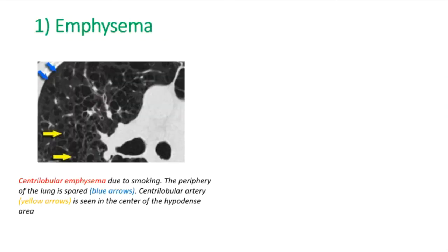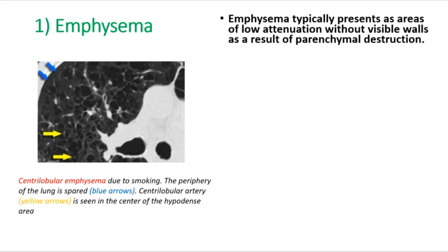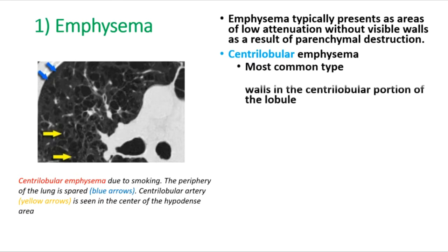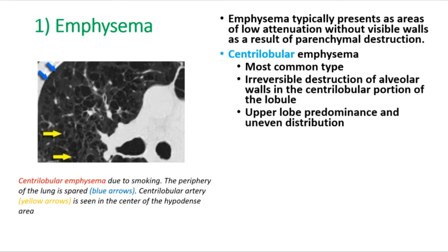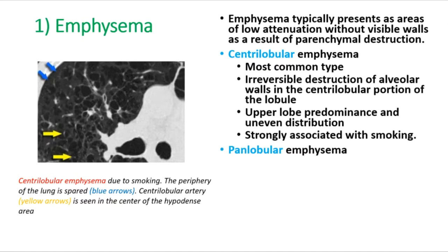Emphysema typically presents as areas of low attenuation without visible walls, as a result of parenchymal destruction. Centrilobular emphysema is the most common type — irreversible destruction of alveolar walls in the central lobular portion, with upper lobe predominance, uneven distribution, and a strong association with smoking. Panlobular emphysema affects the whole secondary lobule.